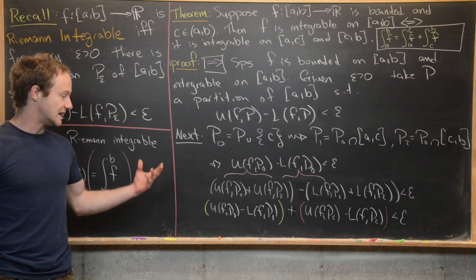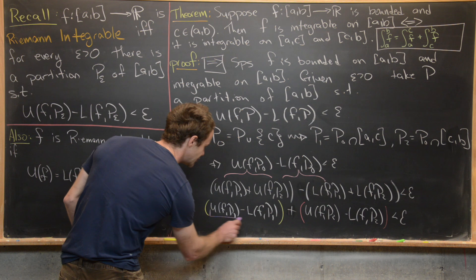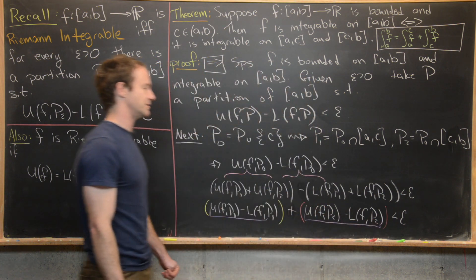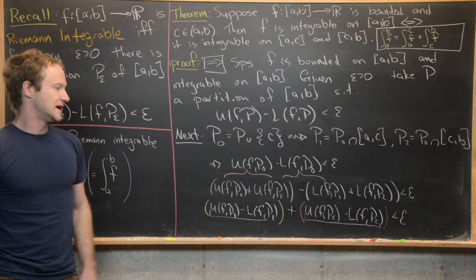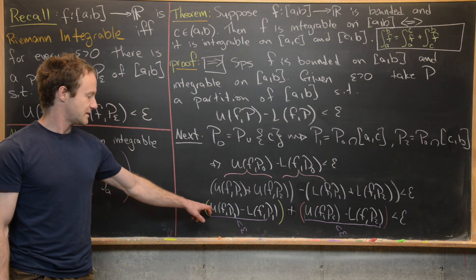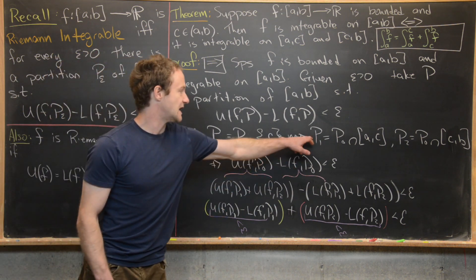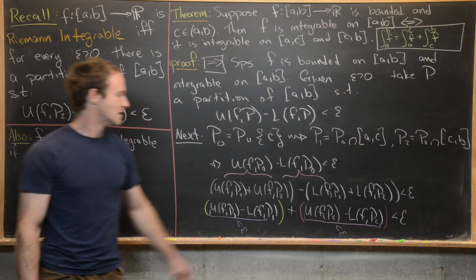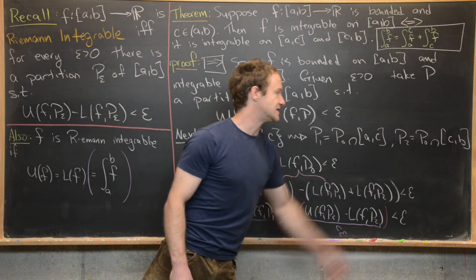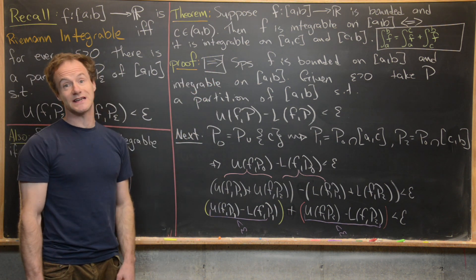By a previous result the upper sum is always at least as large as the lower sum, so each of U(f,P_1) - L(f,P_1) and U(f,P_2) - L(f,P_2) is non-negative. Since both are non-negative and their sum is less than epsilon, each one individually is less than epsilon. The first being less than epsilon gives integrability on [a,c] since P_1 is a partition of [a,c], and the second gives integrability on [c,b] since P_2 is a partition of [c,b]. That completes the forward direction.